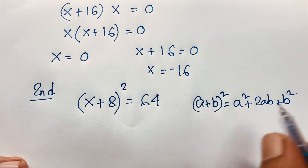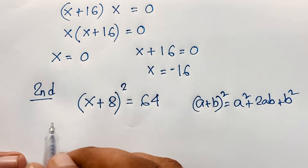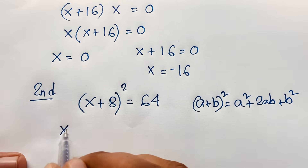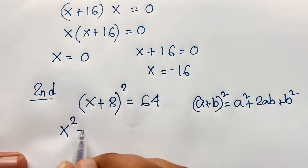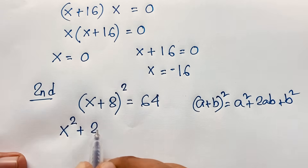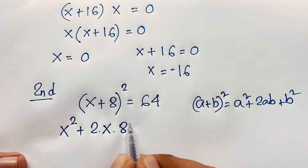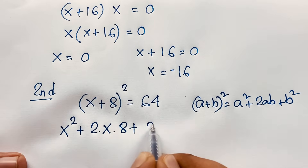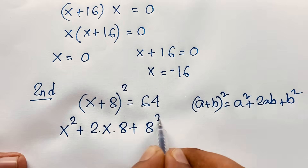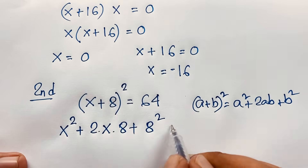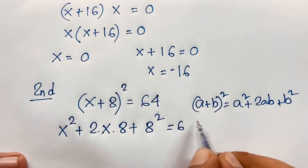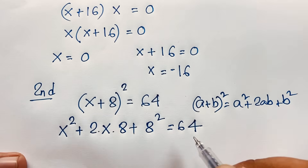If I apply this math rule here, it will be a² + 2ab + b², meaning x² + 2(x)(8) + 8² = 64.